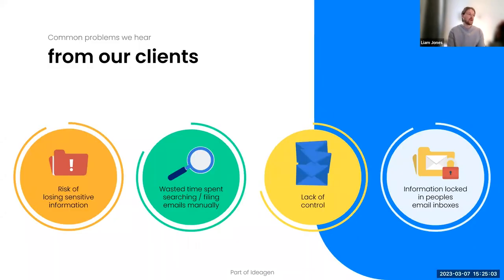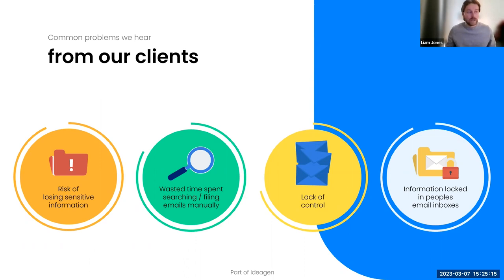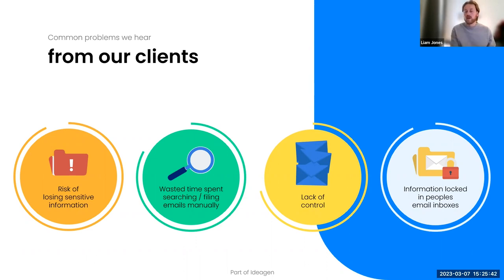Some of the common problems I hear personally as an account executive are: the risk of losing sensitive information if there's nothing in place to ensure it's being filed — there's a high chance it's not going to happen. There's also time wasted filing and searching emails manually, which is especially tough using something like SharePoint. As Dominic mentioned, even with keywords it's still very tough to get into SharePoint and find an individual email without having to open many to get to that point. There's lack of control — we're not all working from offices anymore and can't be over someone's shoulder to ensure they're doing what's needed. And finally, information being locked in people's inboxes.